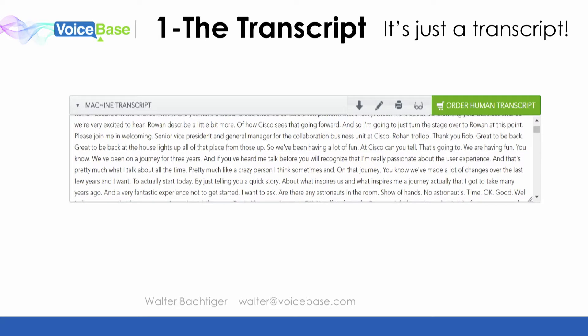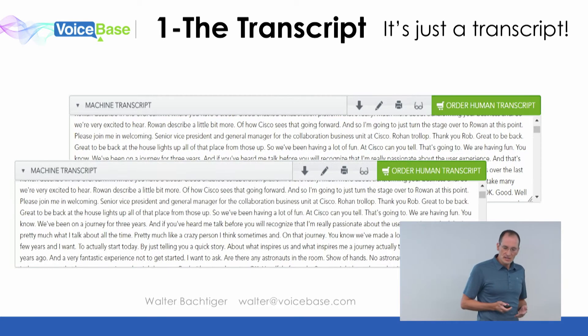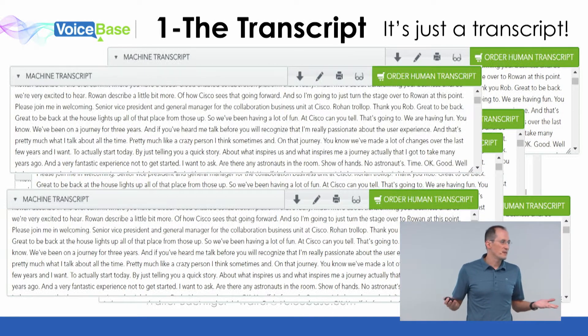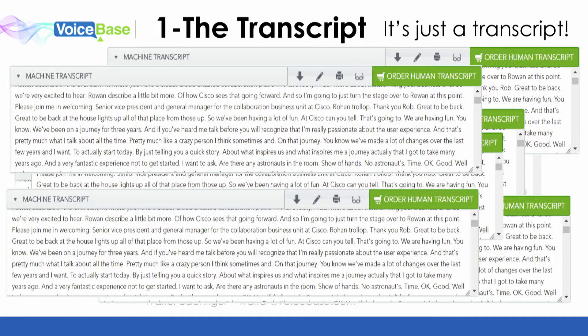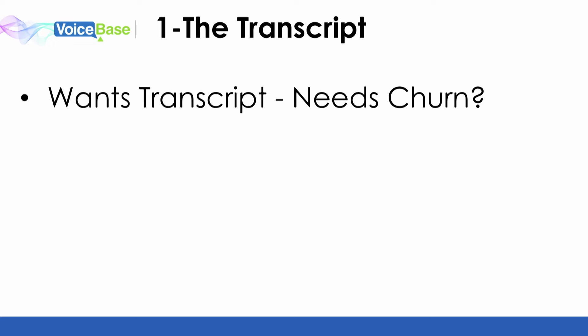First is a transcript — a machine-generated transcript. The challenge is it is just a transcript. The moment you have thousands or millions of conversations, what do you do with those? Companies come to us and say they want a transcript, and we say, actually no. You don't want a transcript. You need a churn detector, an appointment detector, a hot leads detector, a quality score for your agents. That is the real solution.